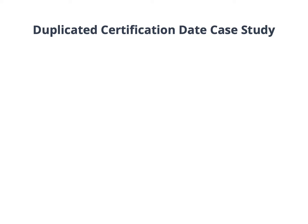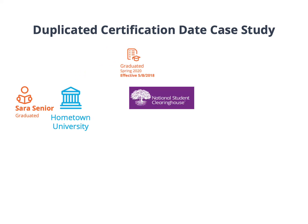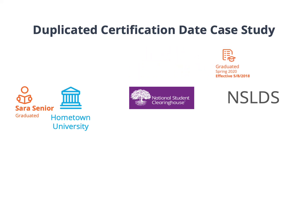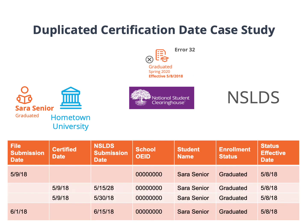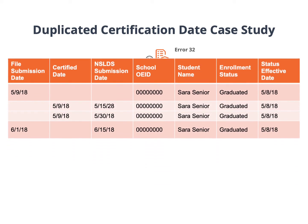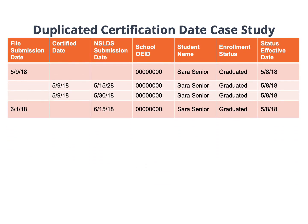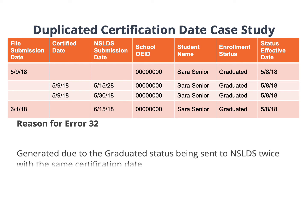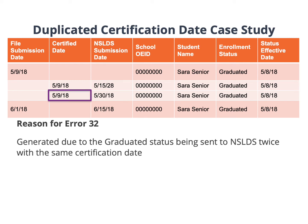Now we will go over a case study on this scenario. Sarah Sr. is a recent graduate from Hometown University. Sarah's graduated status was successfully reported to the clearinghouse and was then reported to NSLDS through the SSCR process. After reporting this graduated status to NSLDS, an Error Code 32 was returned. NSLDS will not accept a duplicated record without a different certification date. In the case of this student, the graduation status was sent to NSLDS twice with the same certification date.